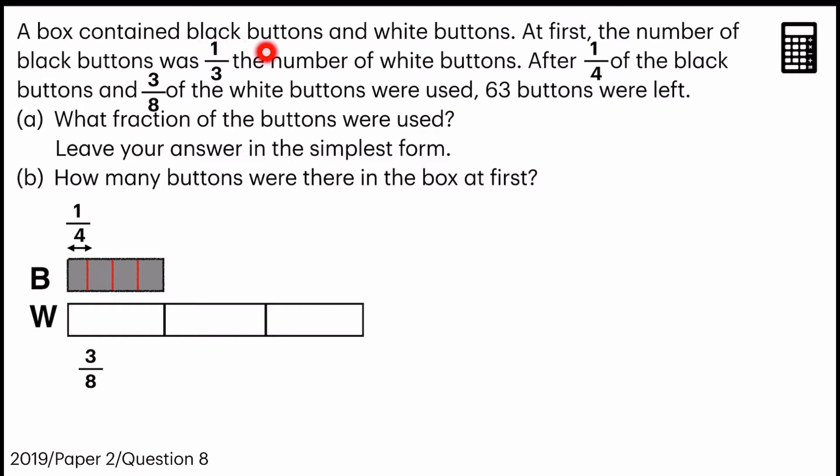A box contained black buttons and white buttons. At first, the number of black buttons was one-third the number of white buttons. So what does this phrase mean? This phrase means that black buttons, there's one unit, and as for white buttons, there are three. Okay, so we are done with that.